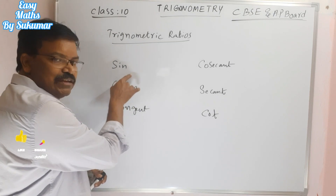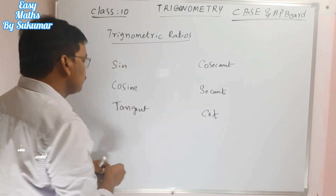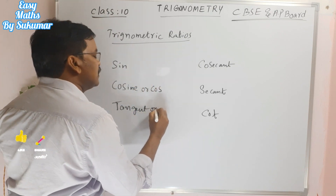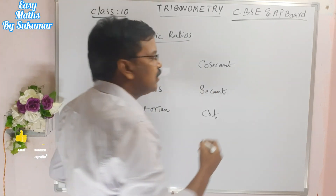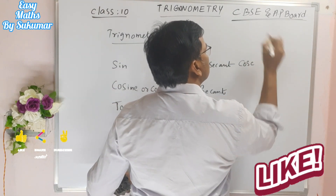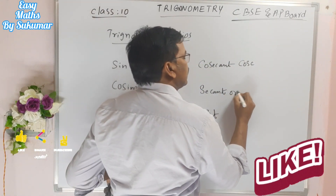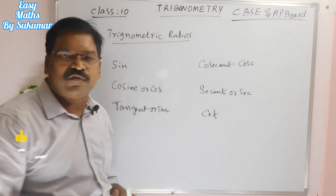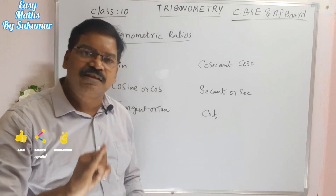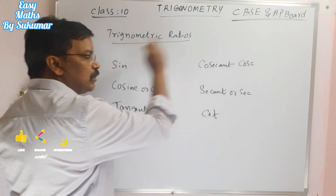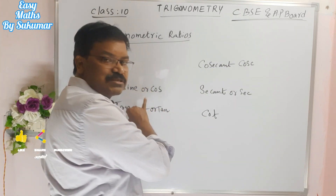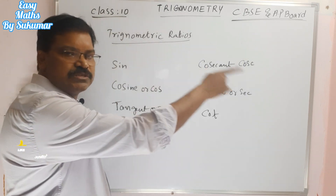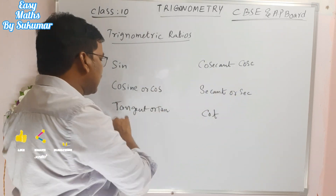To repeat: sine, cosine (cos), tangent (tan), cosecant (cosec), secant (sec), and cotangent (cot). Sin's reciprocal is cosecant, cosine's reciprocal is secant, and tangent's reciprocal is cot.